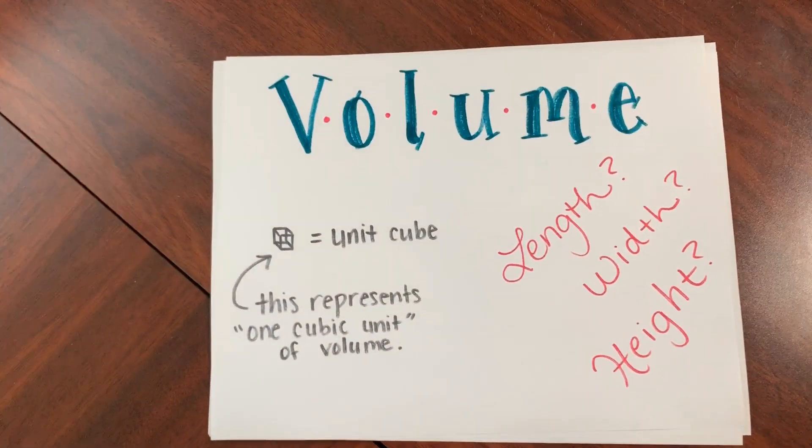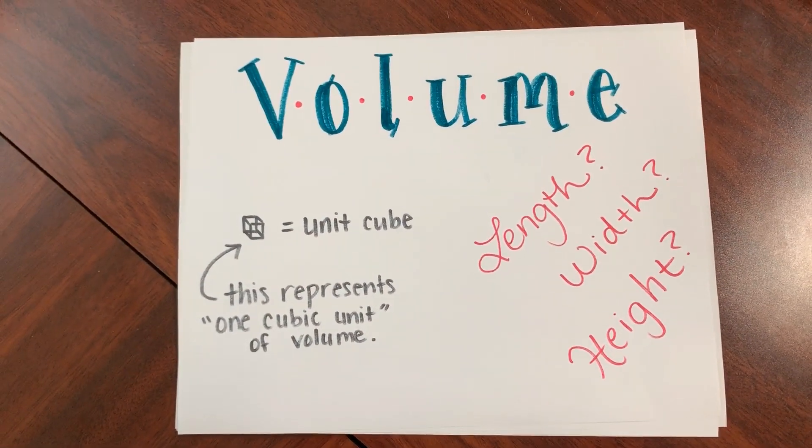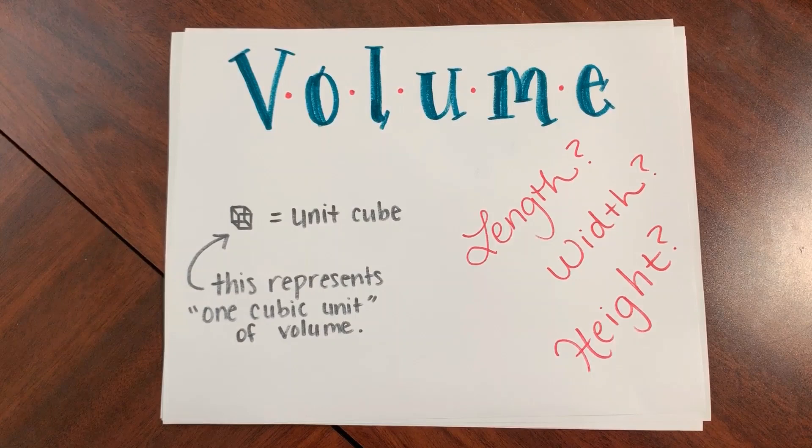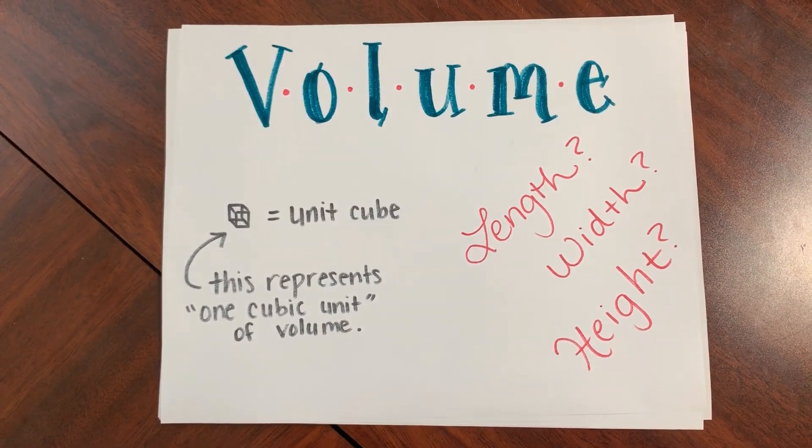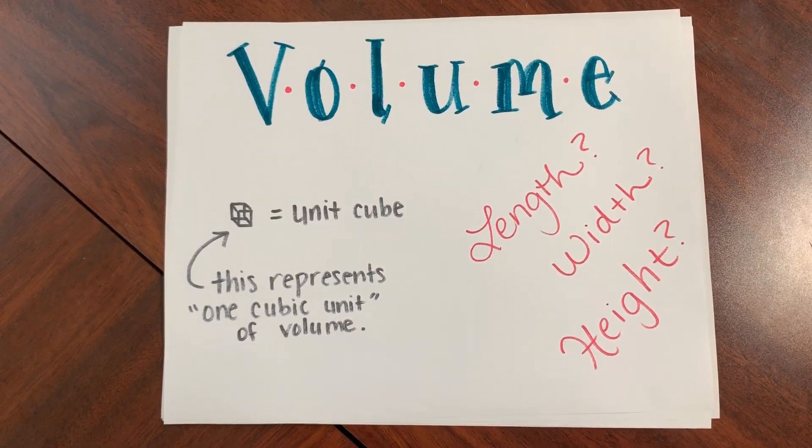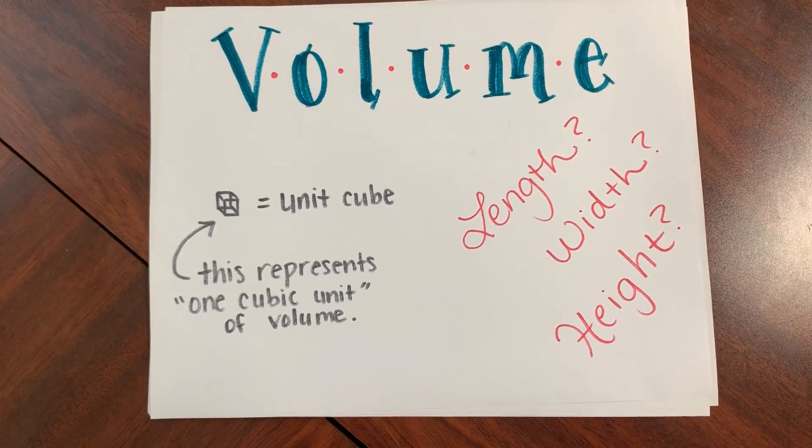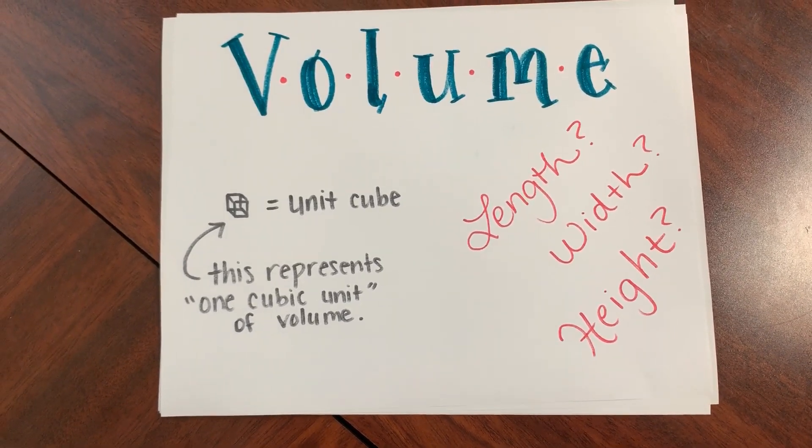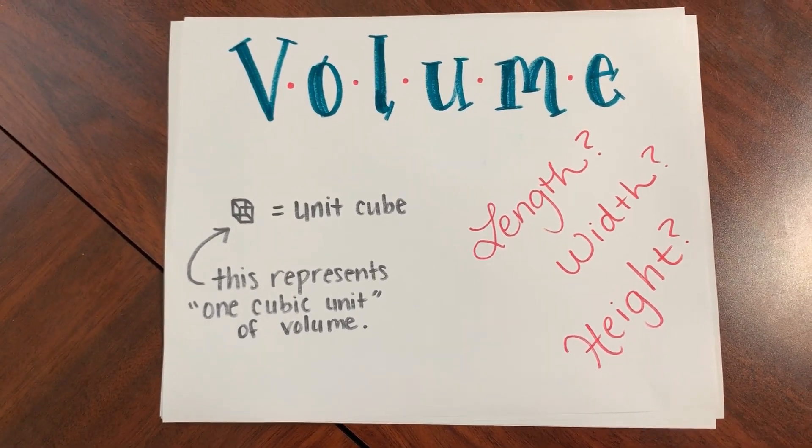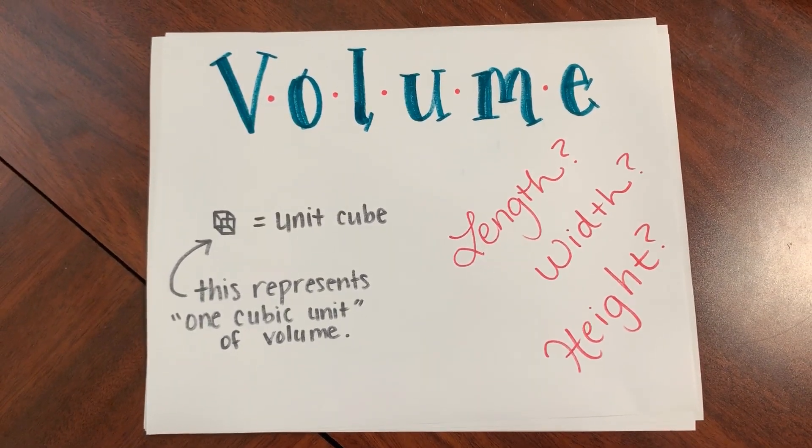As a reminder, we've been using those little unit cubes to determine the volume of a rectangular prism. A unit cube represents one cubic unit of volume. We call it a unit cube because each side is one unit long, or wide, or tall.